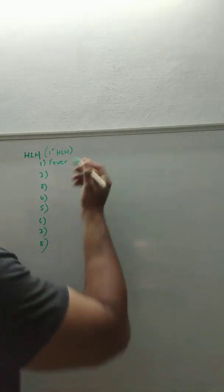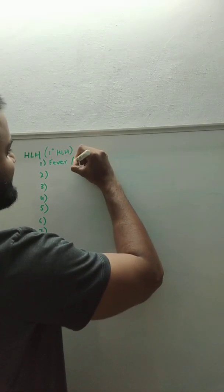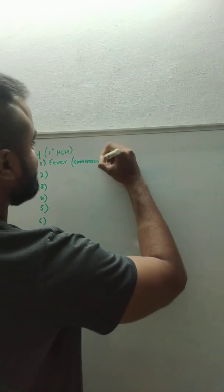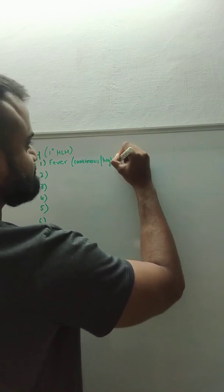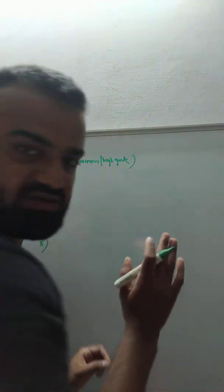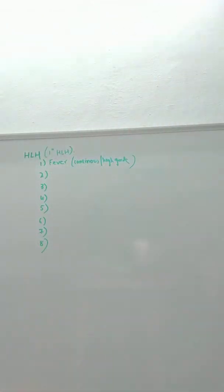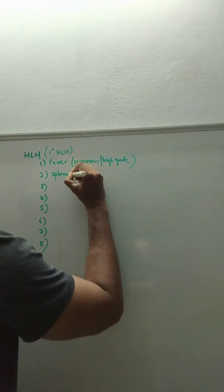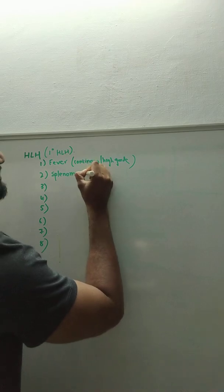The first thing you need is fever that is continuous in nature, high grade, and the patient is usually very uncomfortable due to this. The next criterion is splenomegaly, which is usually acute in nature with a sudden enlargement of the left superior quadrant, found when you palpate the patient.